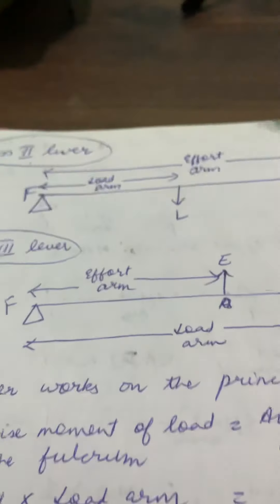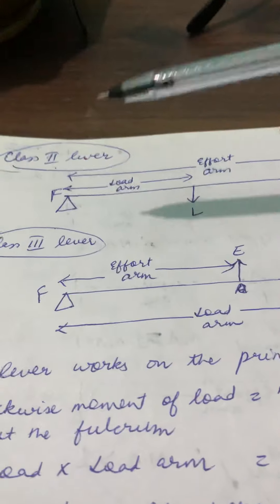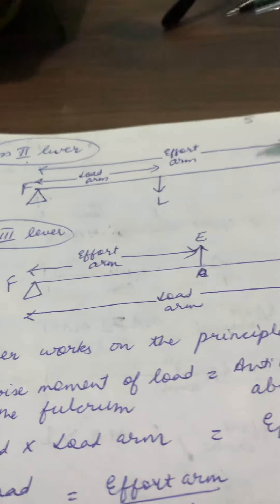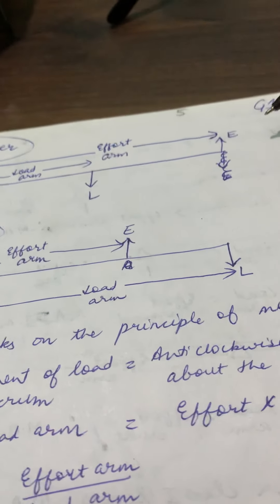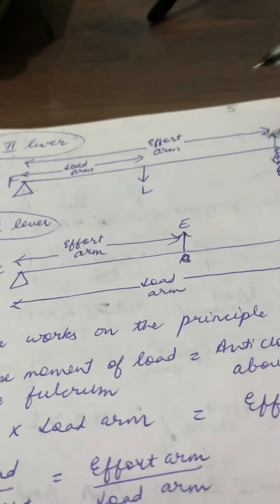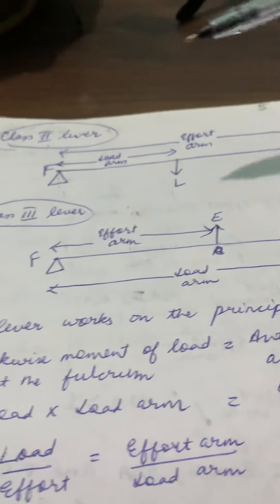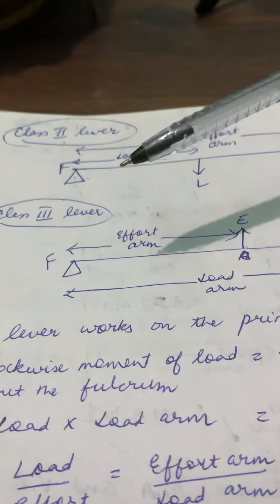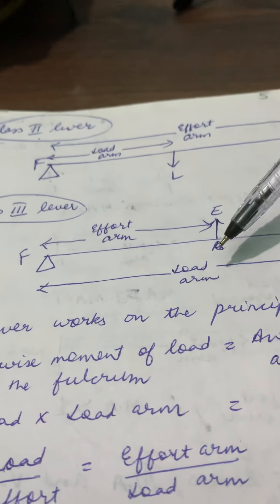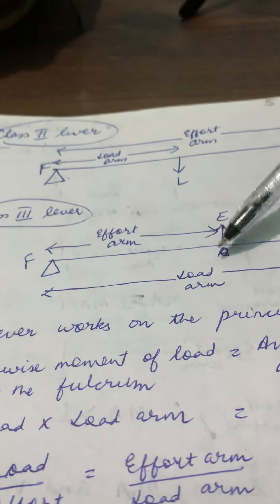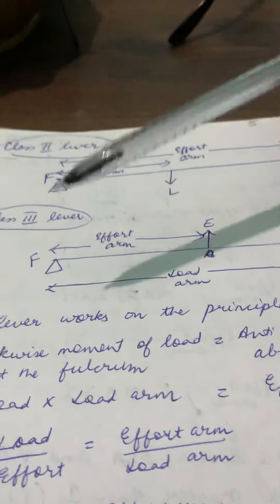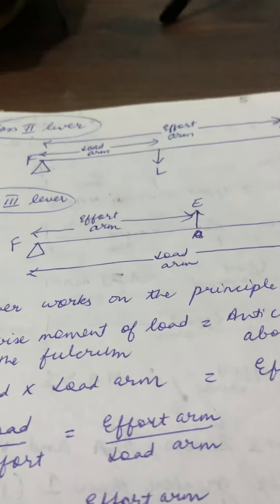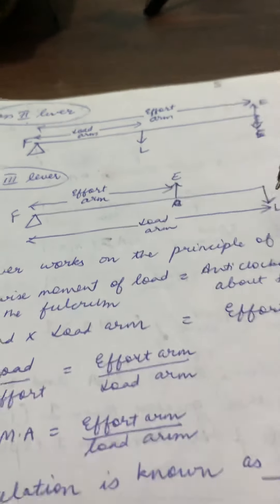In a class two lever, the load is in the middle, and the fulcrum and effort are on the sides. Next is your class three lever — in this, the effort is in the middle, and the fulcrum and load are on the sides.